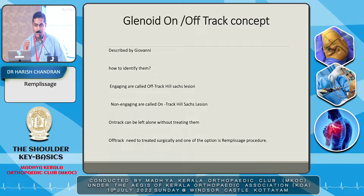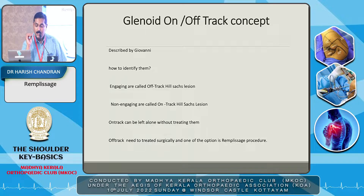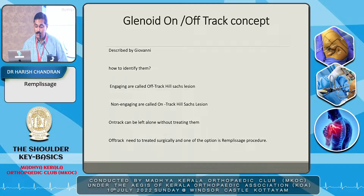To keep it simple, since this is a basic shoulder arthroscopy conference: engaging Hill-Sachs lesions are called off-track Hill-Sachs lesions, and non-engaging are called on-track Hill-Sachs lesions. An on-track lesion can be left alone without treatment, whereas an off-track lesion needs to be treated surgically — one option being the Remplissage procedure.